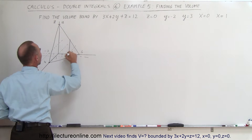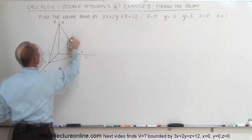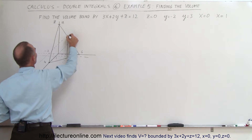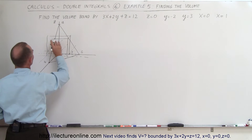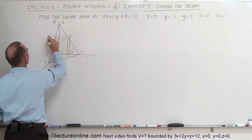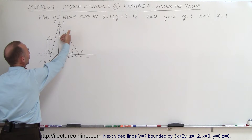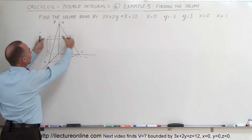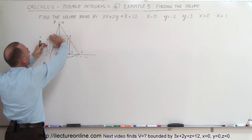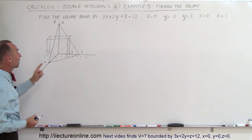Drawing this out, we have a rectangular shaped region at the base. The top is slanted because it's up against the plane which is at an angle. It's a rectangular shaped object at the bottom and then it extends up against the plane.